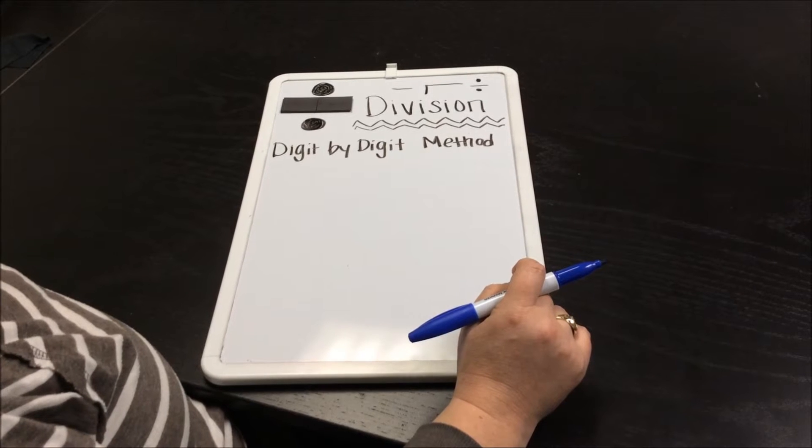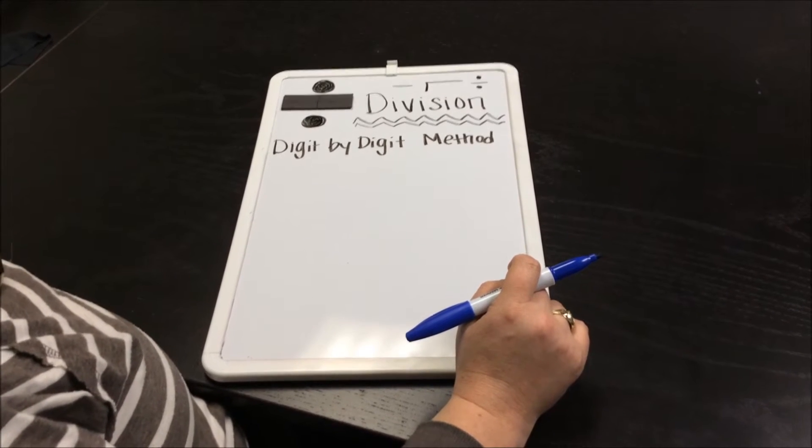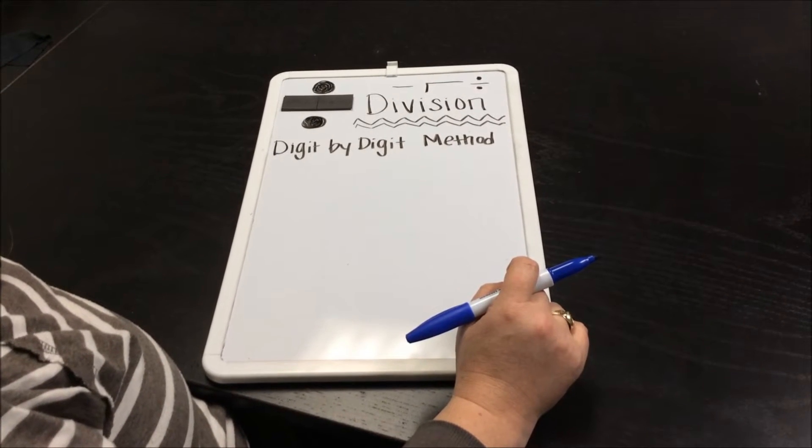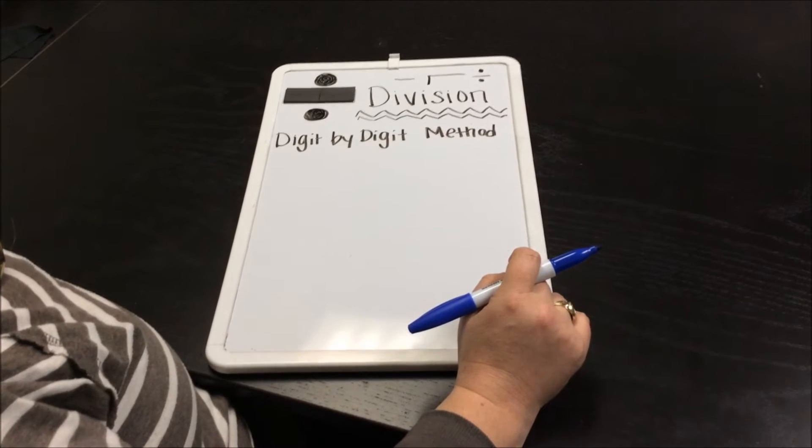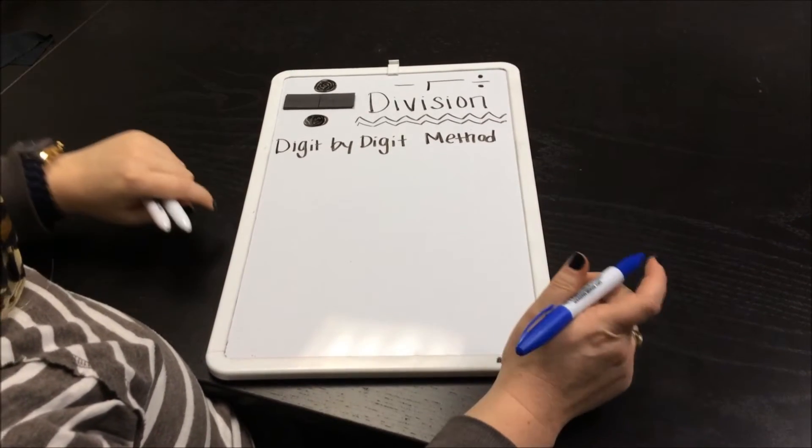The method we're going over now is digit by digit, and it's a little different. We are becoming division experts, so I'm going to increase our dividend by another digit.